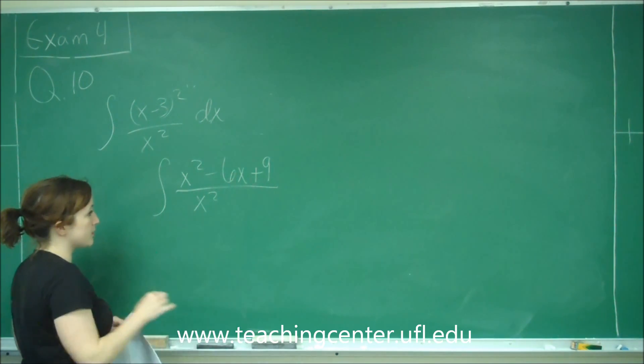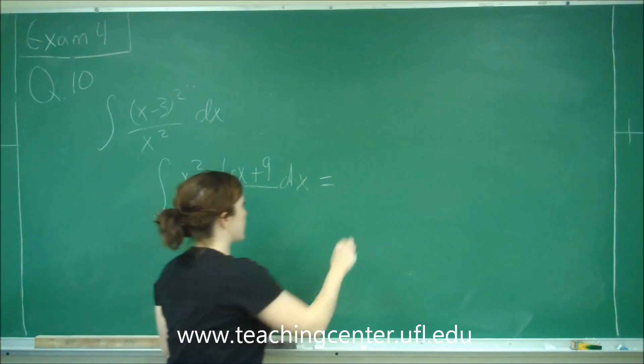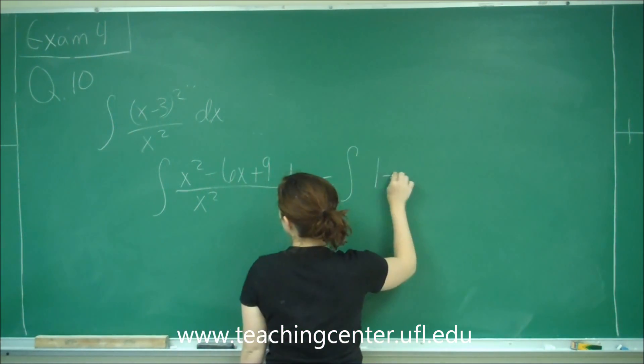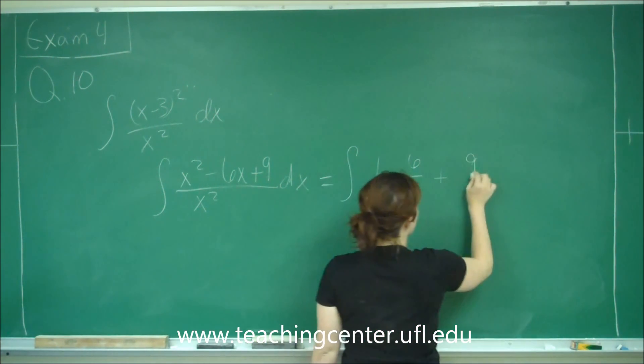Then what we're going to do is divide our numerator by x². So this is going to give us the integral of 1 - 6/x + 9/x².